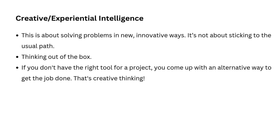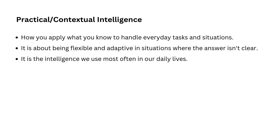Next is practical intelligence, also known as contextual intelligence. This type is all about street smarts — knowing how to handle everyday tasks and applying what you have learned to the real world. For example, imagine you are trying to manage your time during a busy school day — figuring out how to balance your homework, classes, and after-school activities. That's practical intelligence: using common sense and real-world problem-solving. It also means knowing how to adapt to your environment and work with people, and in many ways it's the intelligence we use most often in our daily lives.